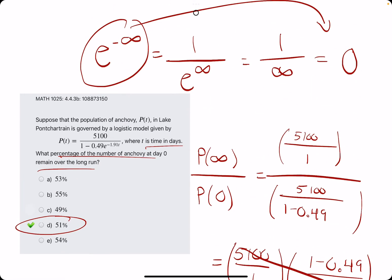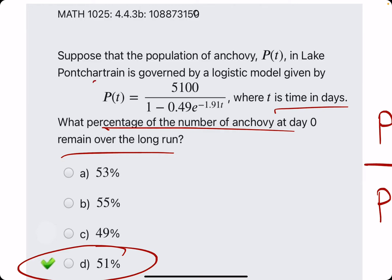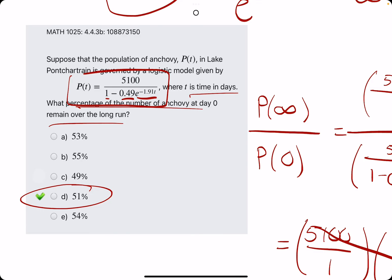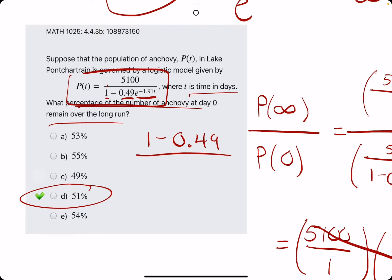So, if we break that down, when we are given this function, there's always two numbers in the bottom. One is attached to the e term and the other is not. And, so, what we do is perform the operation between those two numbers that, you know, is presented. Sometimes, it's subtraction. Sometimes, it's addition.